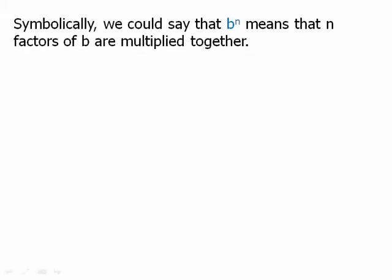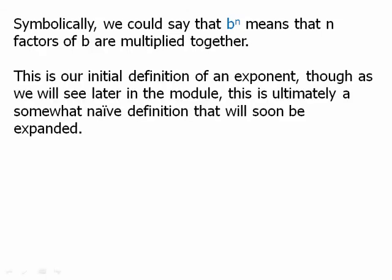Symbolically, we could say that b^n means that n factors of b are multiplied together. So this is the fundamental definition of what an exponent is. And right now, I'll just say b is the base, n is the exponent, and b^n is the power. Now this is a good definition for now, but as we'll see, this definition is ultimately somewhat naive, and we're going to have to expand it in later modules.